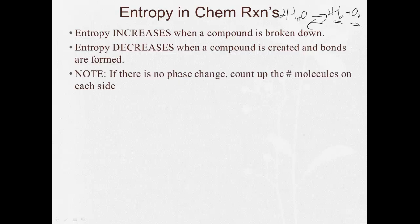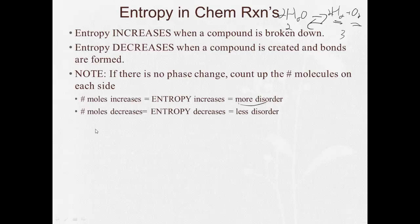When looking at a chemical reaction, if there's no phase changes, we count up the number of molecules on each side. So here on the left, there's two molecules. Here on the right, there's three. More molecules, more disorder, increase in entropy. The number of moles increases, entropy increases, more disorder. If the number of moles decreases, entropy decreases, less disorder.